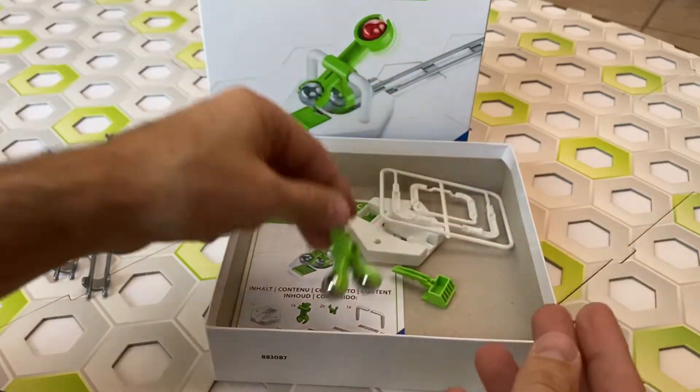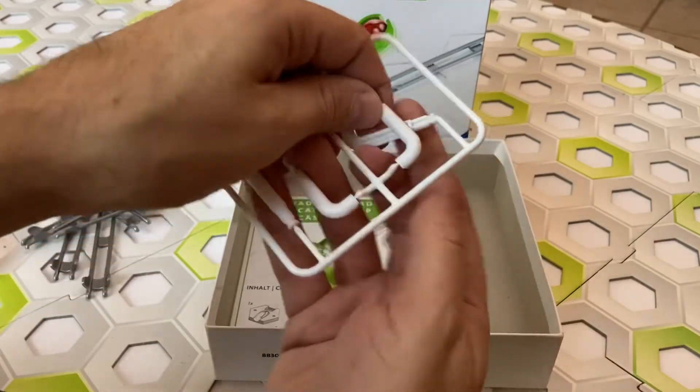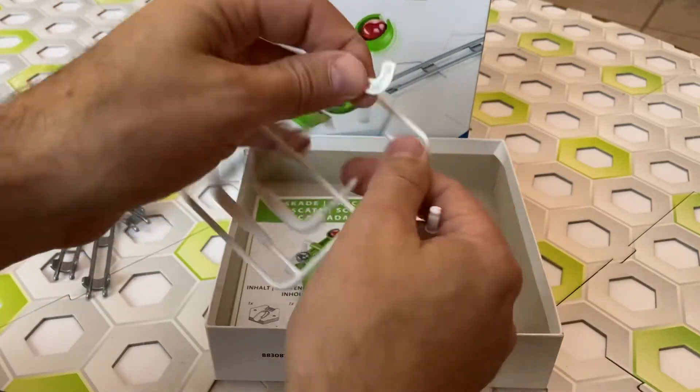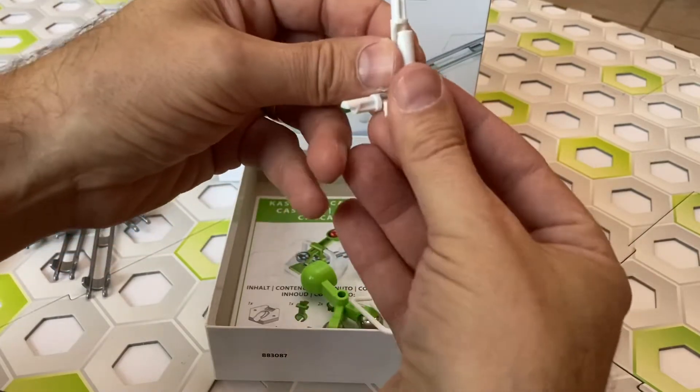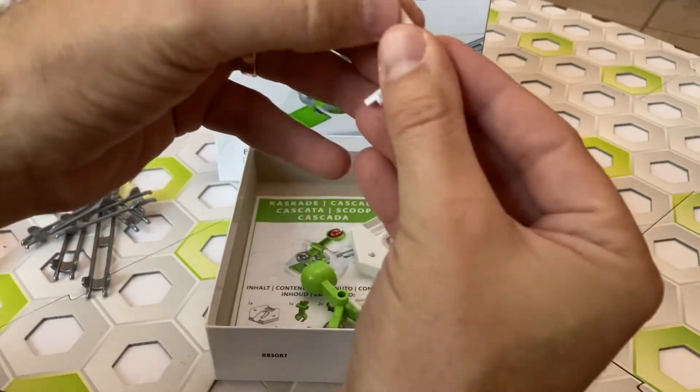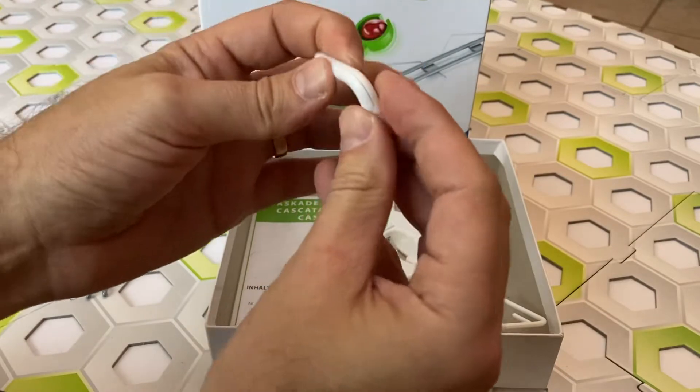Those snap on like that. Next we have to assemble the two arms of the scoop. The arms come in two halves which must be pressed together. Just align the pegs with the holes and press together, like so.